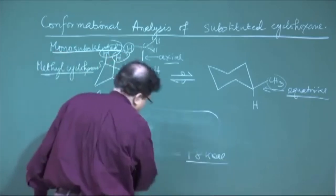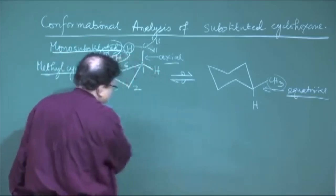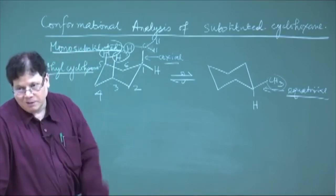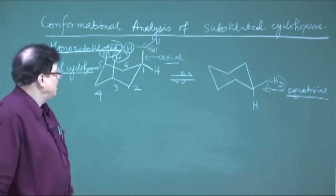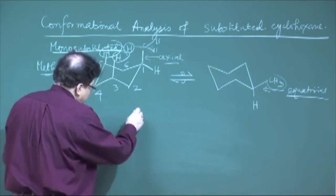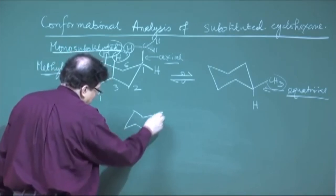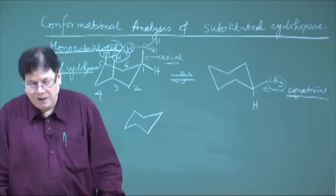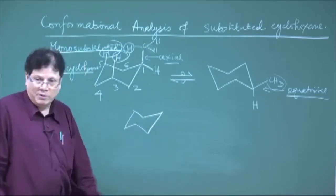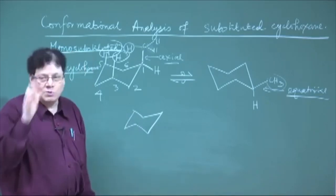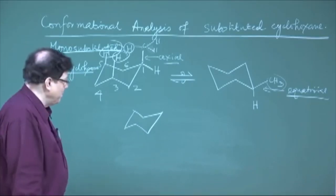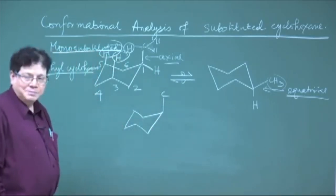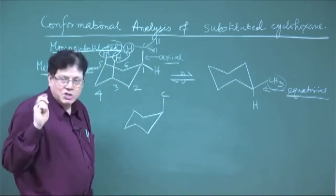Another way is the same approach we used to analyze the cyclohexane chair: dissecting the molecule into n-butane units. When we had the cyclohexane chair form, we dissected it into 6 butane units, all in the gauche conformation, giving 6 × 0.9 = 5.4 kcal/mol. Once we introduce an extra carbon — a methyl group — we introduce 2 extra butane units.